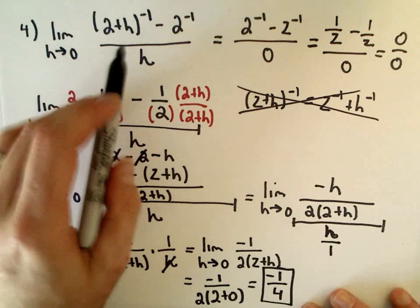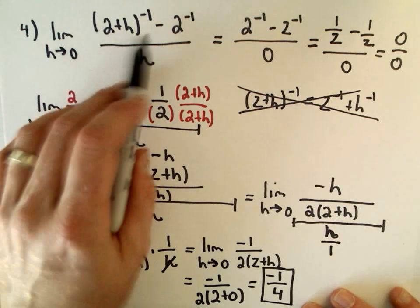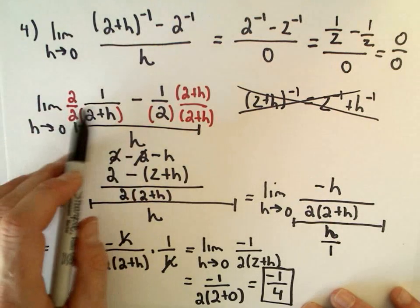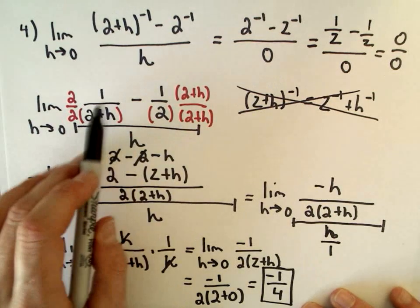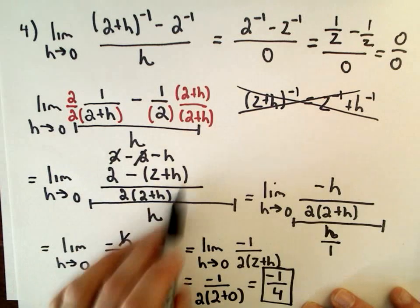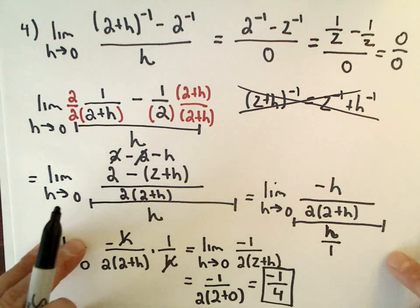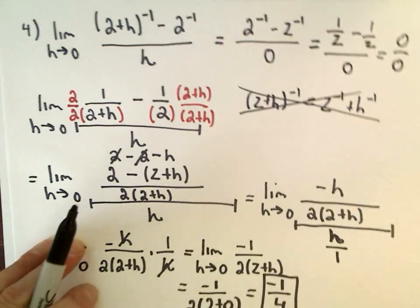There are lots of little places to get tripped up in that problem. But once you get to the common denominator step, it's mainly just being careful about distributing the negative and canceling things out.